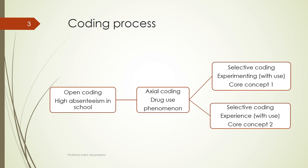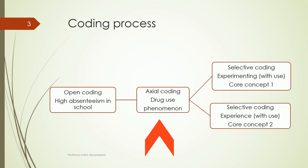For example, at the open coding stage when we begin the research, we notice there is high absenteeism in schools. We want to find out why, and let us assume there is no existing theory to explain it. So we do open coding — collect data through interviews and analyze them — and we find that what is emerging when talking about absenteeism is drug use.